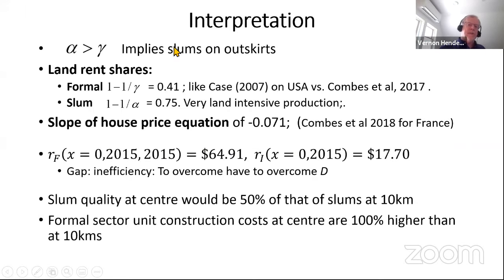This implies slums on the outskirts. The formal sector's share in land rents — or land share in revenue — is 0.41, similar to the US and a little higher than France, which is about 30%.